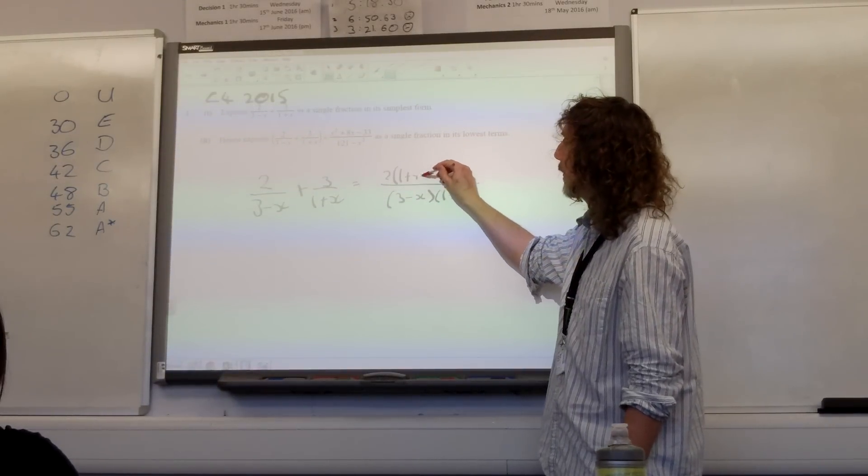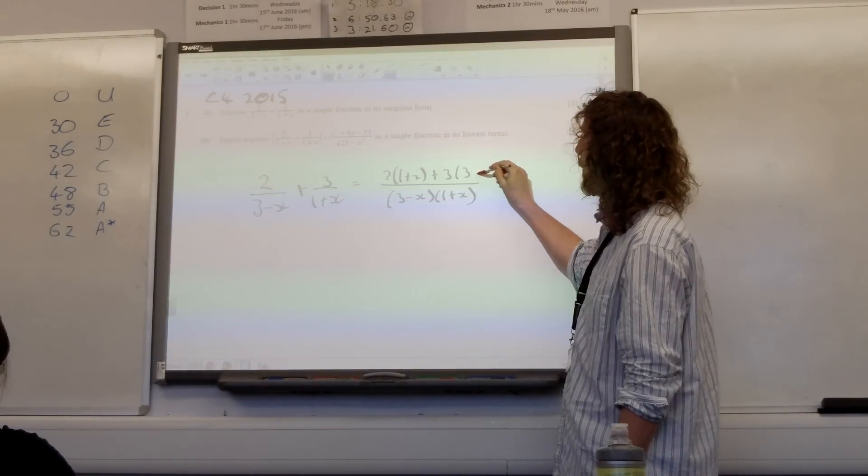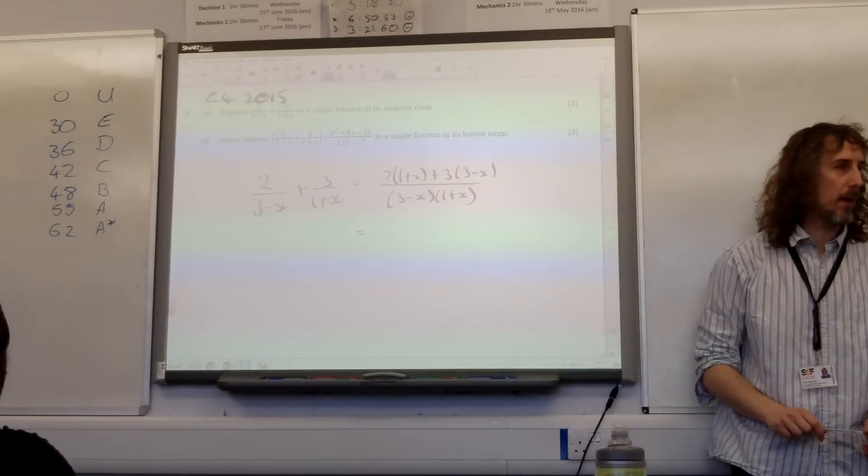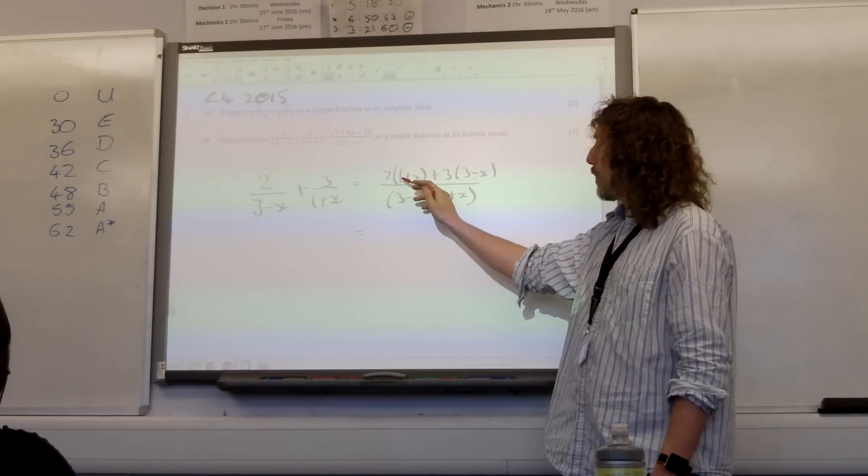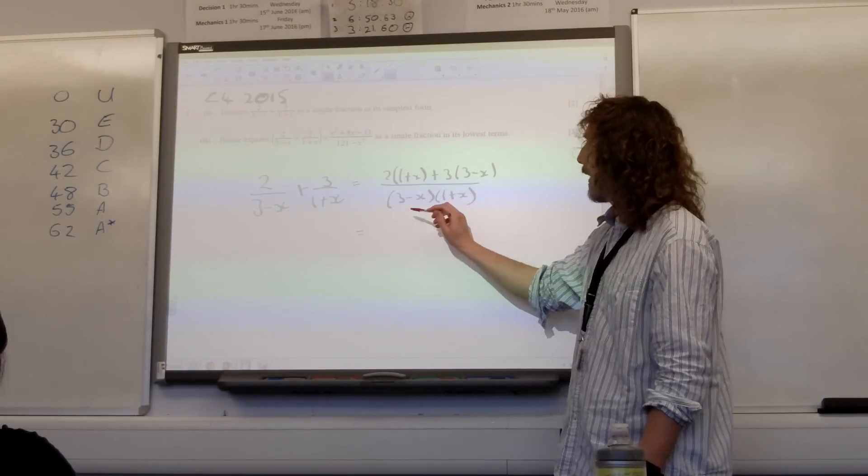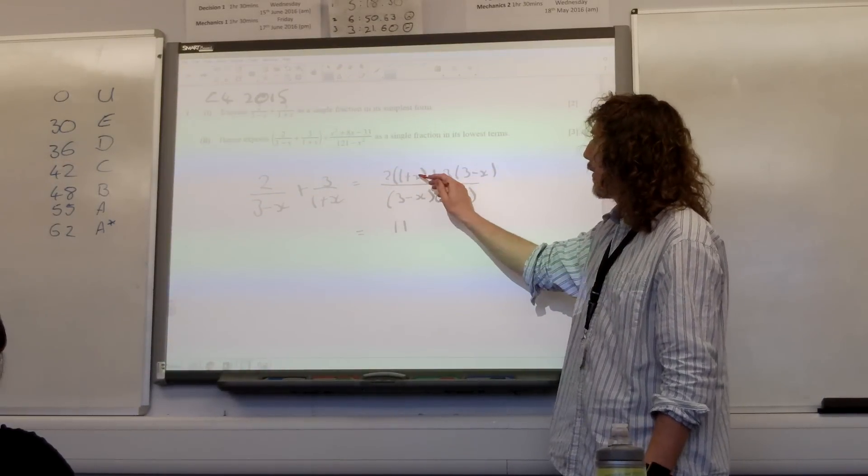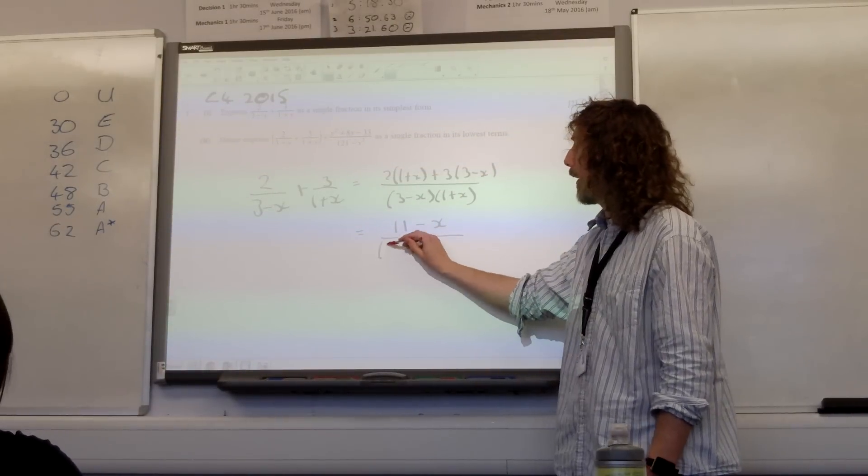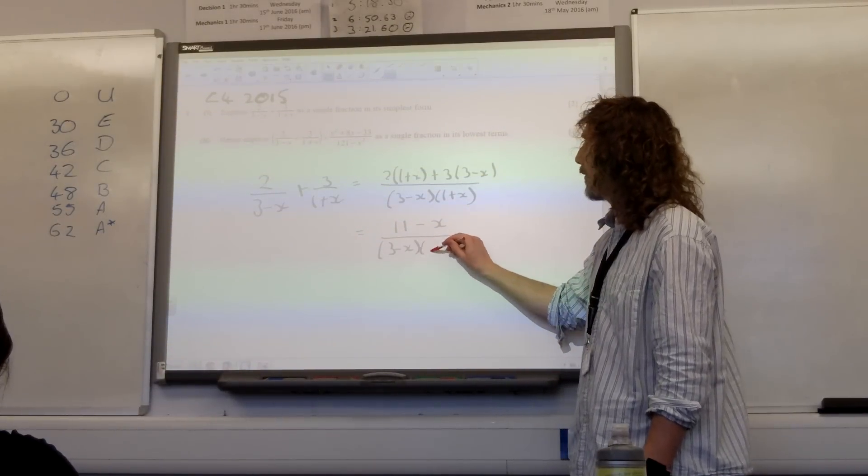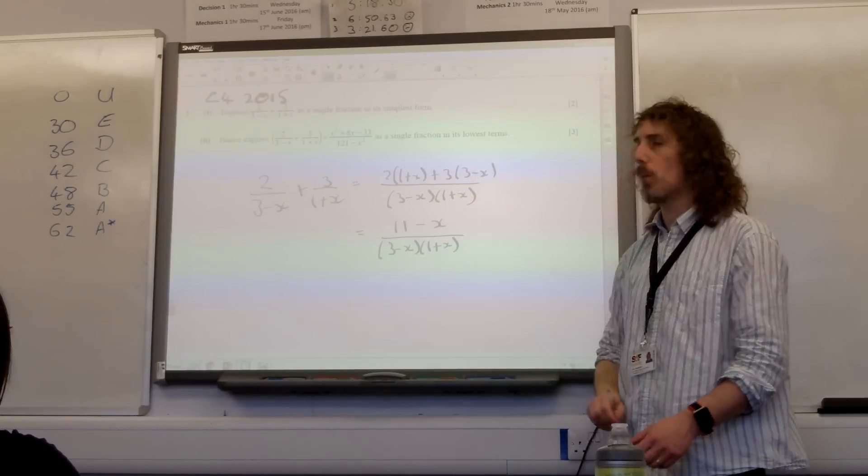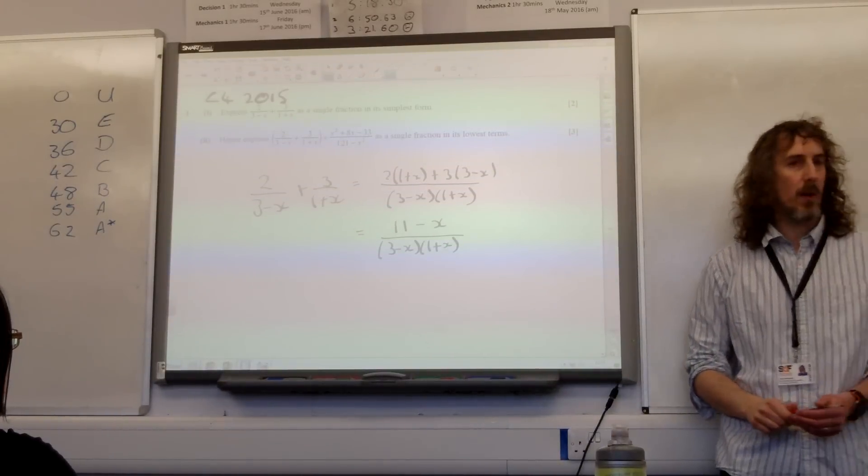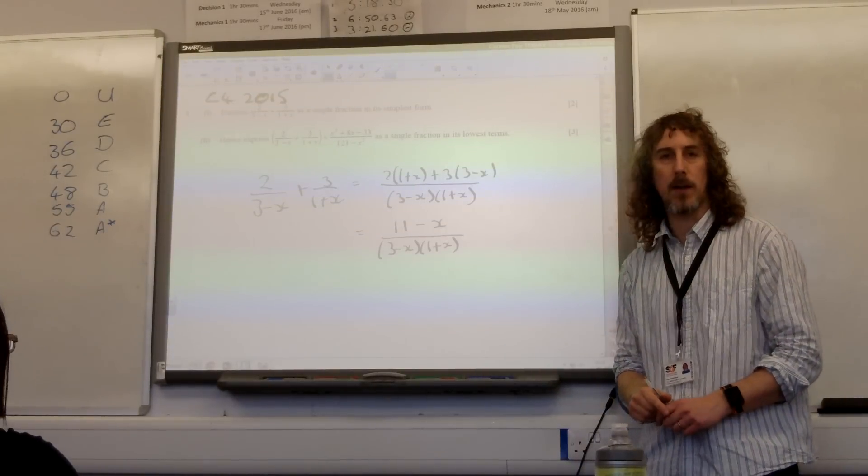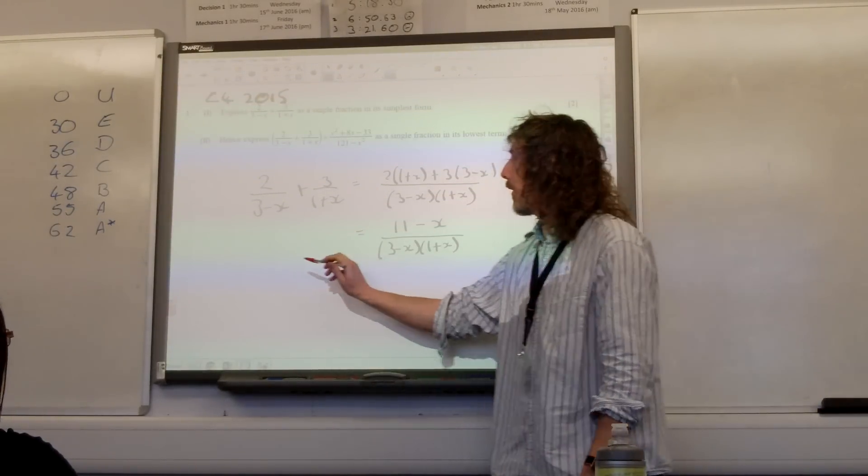The common denominator would be 3 minus x and 1 plus x. So you've got two lots of 1 plus x, just three lots of 3 minus x. That's what we need to be adding together. Which gives us, what's that, 2 plus 9, so 11. 2x take away 3x is minus x, and the bottom line is our 3 minus x, 1 plus x. I think you could have multiplied it out, but I think leaving it factorized is absolutely fine. There's our first one.